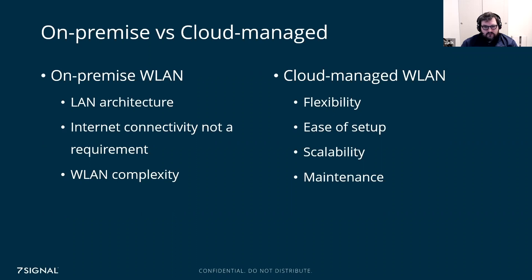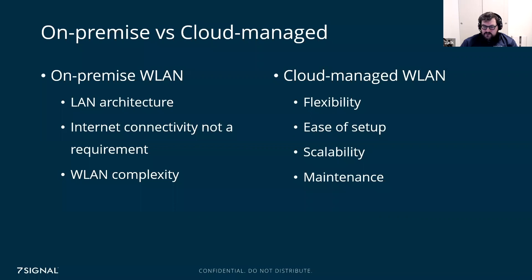With on-premise, you already have a LAN architecture in place and you can add or upgrade a wireless controller. You also don't need internet connectivity — with most cloud-managed providers you need an uplink to the cloud to bring access points online. On-premise also allows added complexity and more finely tuned RF environment configuration, though cloud-managed is getting more capable, even if it's still relatively new compared to on-premise controllers that have been around for years.